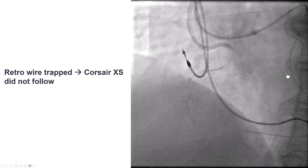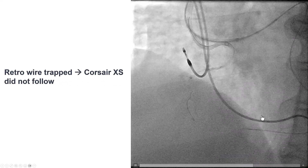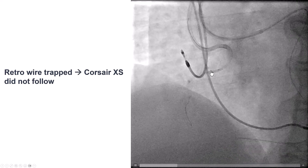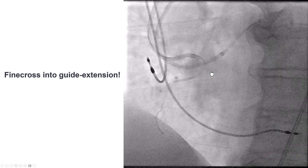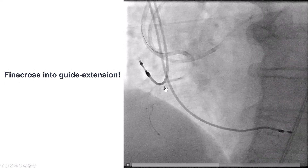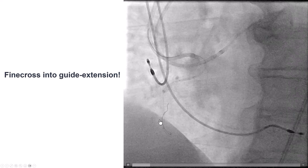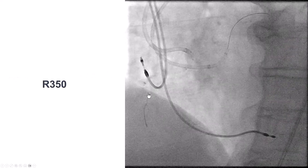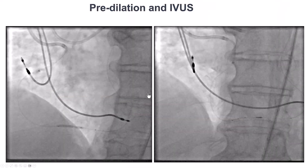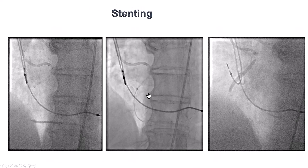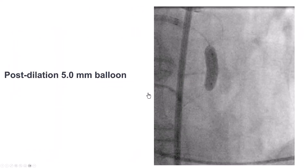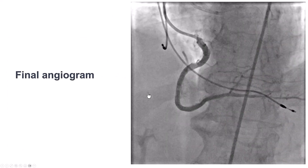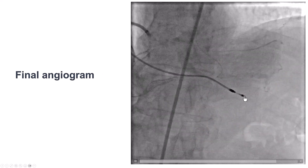We could not advance the retrograde Corsair XS inside the guide extension, so we changed the microcatheter — there may have been some microcatheter fatigue. This time, we were able to get the Finecross into the guide extension, externalized an R350 guide wire, predilated with intravascular ultrasound guidance, placed multiple overlapping drug-eluting stents that were post-dilated, and achieved a nice final result with TIMI-3 flow into the right coronary artery.